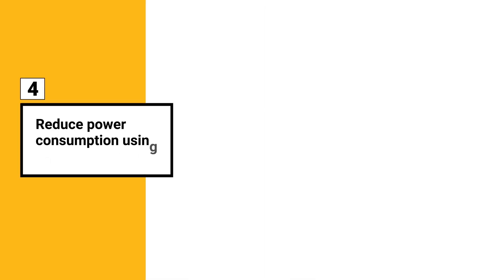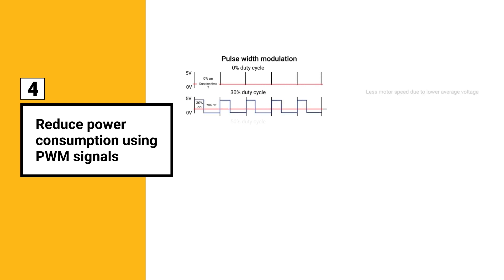Four: reduce power consumption using PWM signals. Use PWM signal with a 75% duty cycle to reduce the mean output power consumption.